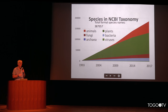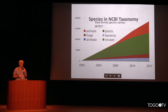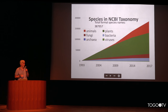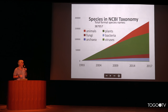Taxonomy was chosen to be a central hub of the data in the databases so that there are shared classifications used by all the databases. So far in the taxonomy database, we have almost 400,000 species, the majority of which is animals, followed by plants, fungi, and then prokaryotes and viruses.